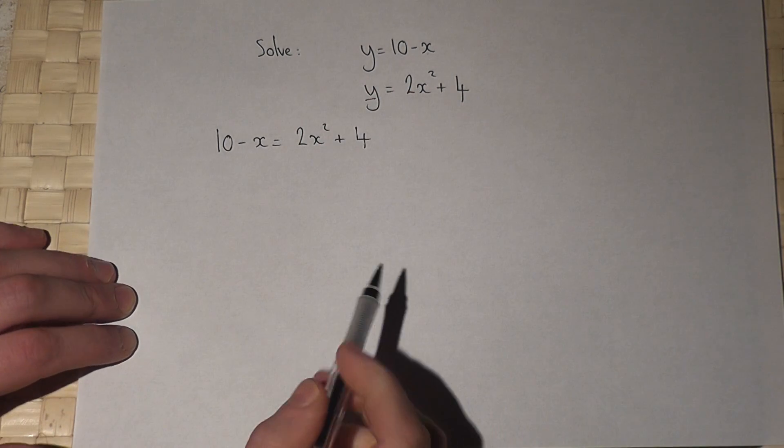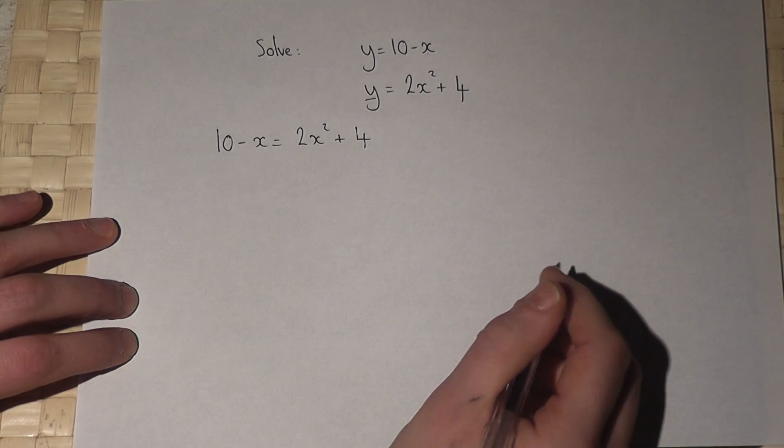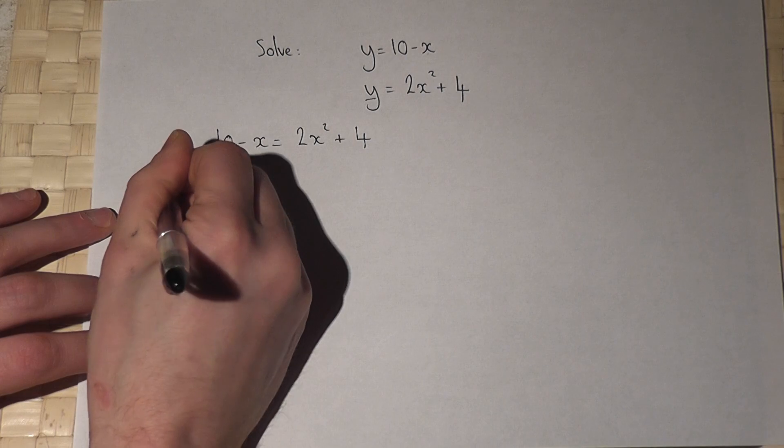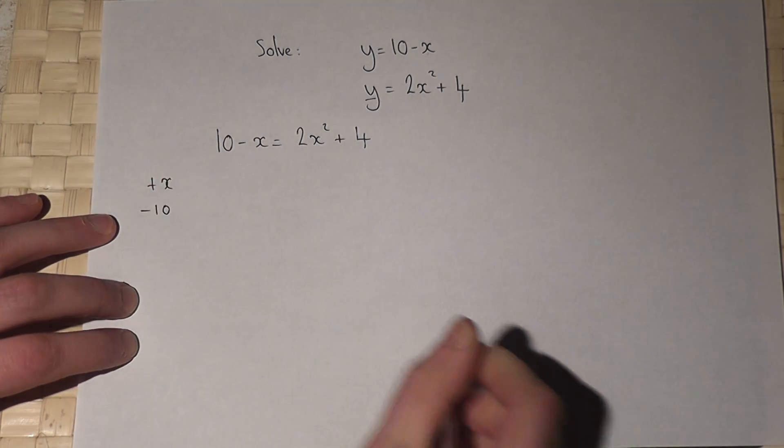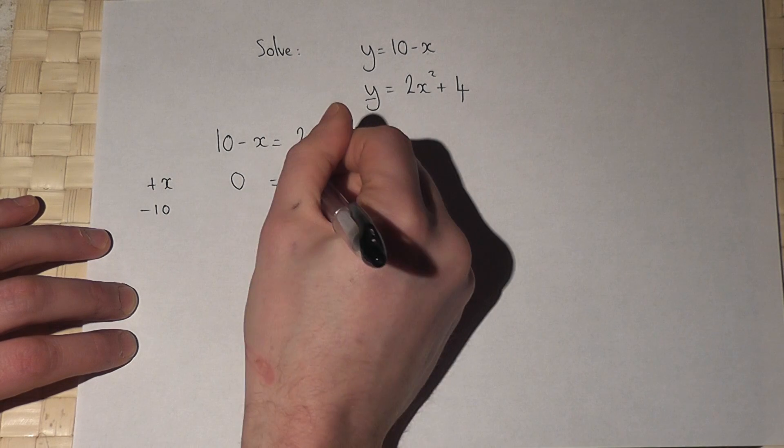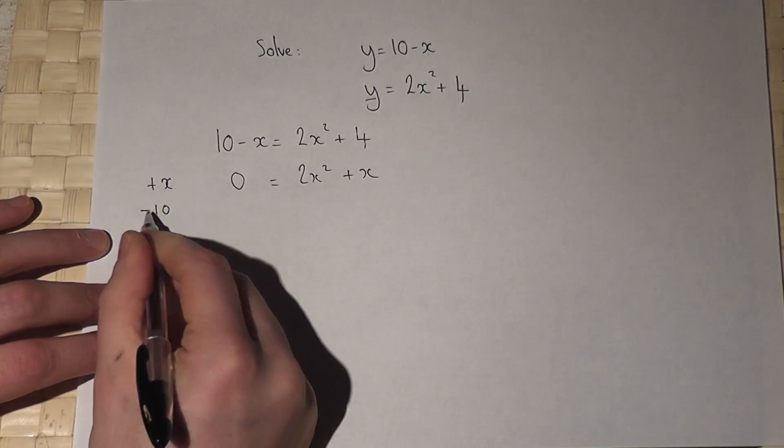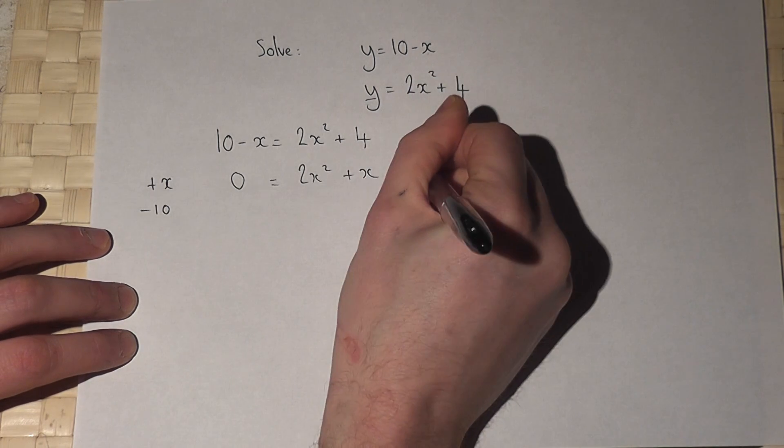Now, to solve a quadratic equation, I must get the equation equal to 0. So if I were to add an x and take away a 10 from both sides, then they cancel off and I get 2x squared plus an x. I've taken away 10, so minus 6.